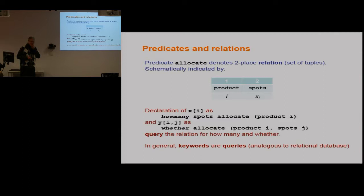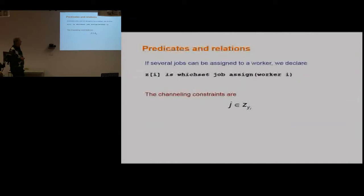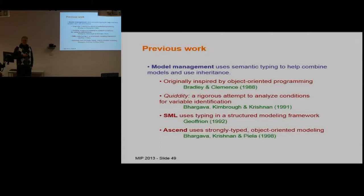The 'how many' and 'whether' keywords are like querying the relation — asking how many spots are allocated to i, or whether a specific allocation holds. This is a projection operator on the relation. The keyword is like a database query; the database consists of relations denoted by predicates associated with the variables. If you have several jobs that can be assigned to the same worker, you use a set-valued variable and a 'which set' declaration, and the channeling constraint is generated automatically.